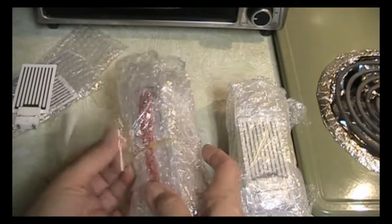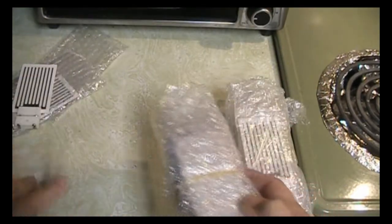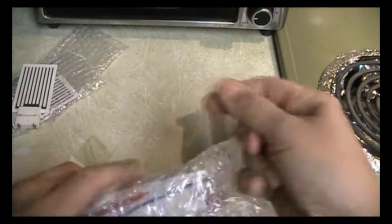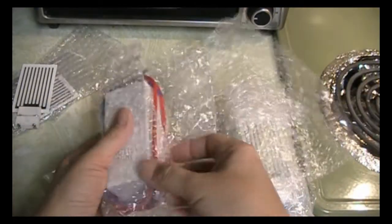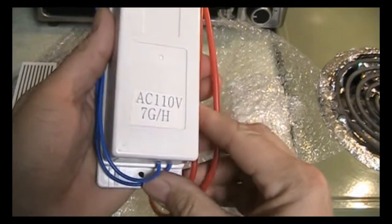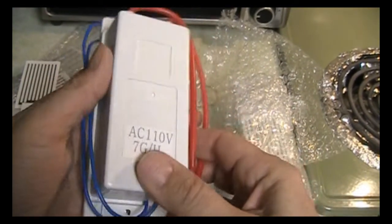And then this is the high voltage generator. There it is. It says AC 110 volts, seven grams per hour.